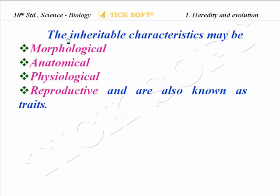The inheritable characteristics may be morphological, anatomical, physiological, and reproductive, and are also known as triads.